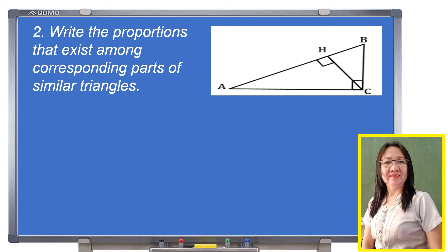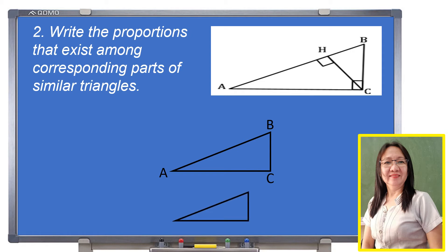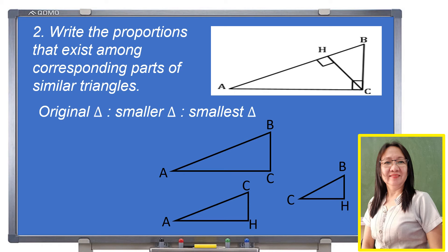To easily understand the topic, let us write the proportions that exist among the corresponding parts of the similar triangles. We separate the figure into three triangles: the original, labeled BCA; the smaller triangle, labeled CHA; and the smallest triangle, labeled BHC. By drawing the triangles separately, we can easily observe the corresponding parts of all three triangles and write the proportions from the original to the smaller to the smallest.